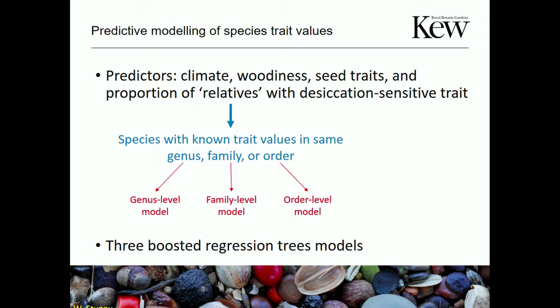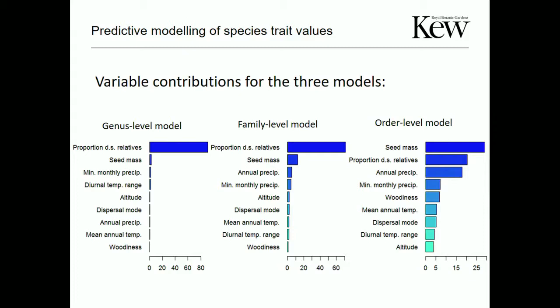Key finding: the proportion of desiccation-sensitive relatives is by far the most important predictor for both the genus-level and family-level models. For the genus-level model, that's basically all you need — other variables don't do much. For the family-level model, seed mass and precipitation variables start becoming important. For the order-level model, you need all variables: seed mass is most important, then precipitation, woodiness, and dispersal mode.